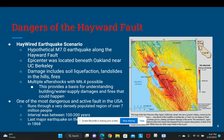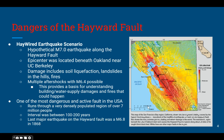Since this fault is so dangerous, it is located in a very densely populated area, as you can see from the map. The last major earthquake that happened on the Hayward Fault was over 200 years ago in 1868, and it was a 6.8 magnitude.